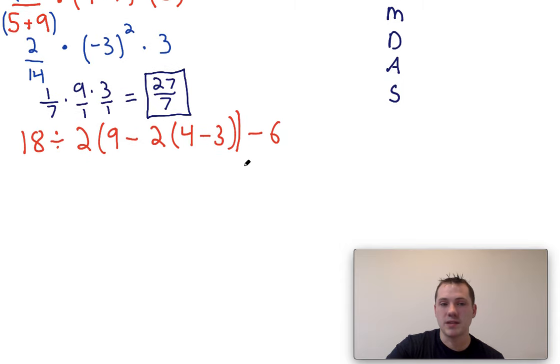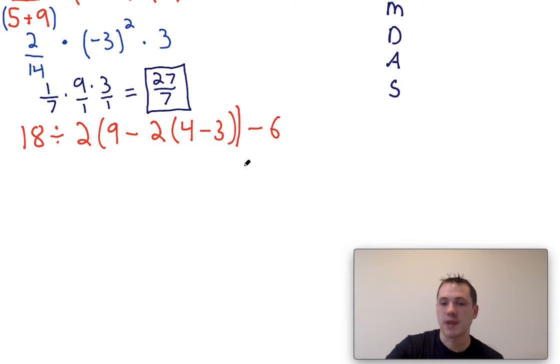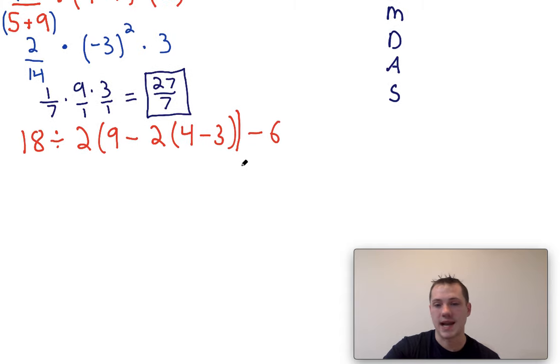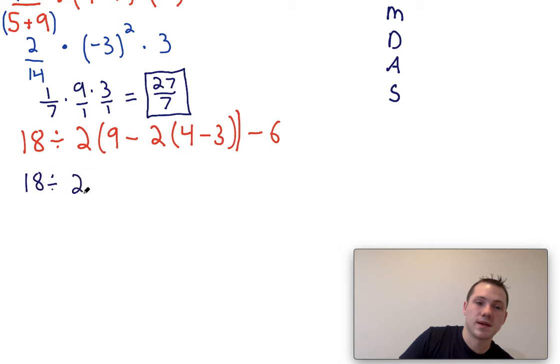Now the next problem might look a little bit intimidating because we have multiple sets of parentheses, but you just kind of have to remember that you really work from the inside out. So we want to start with the innermost parentheses and then we're going to work our way out as we go. So step one here is I'm going to simplify this 4 minus 3, and that's just going to give me 1.